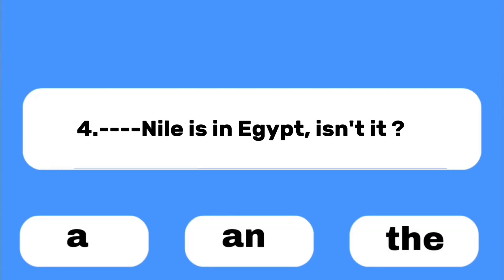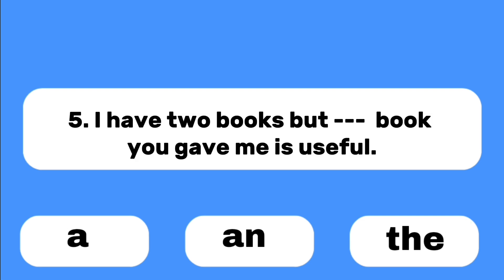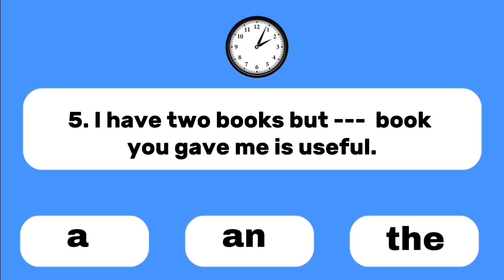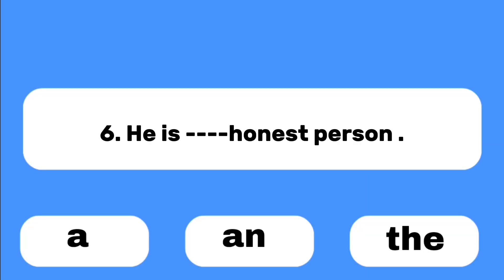Number four: ___ Nile is in Egypt, isn't it? The answer is 'the' — the Nile. Number five: I have two books but ___ book given to me is useful. Here 'the' is used to refer to something that has already been mentioned.